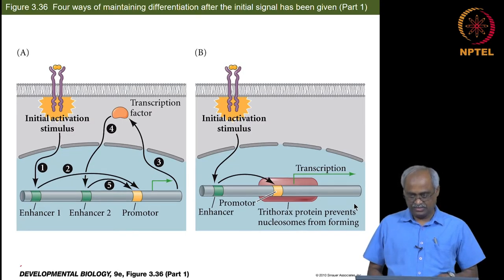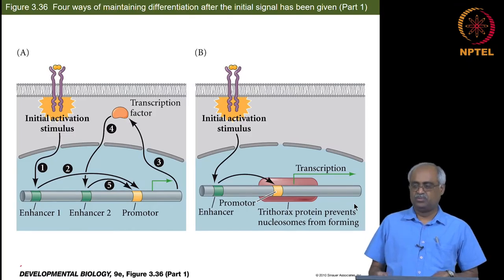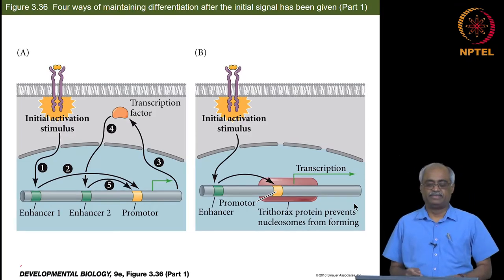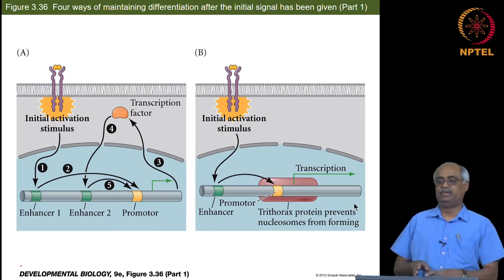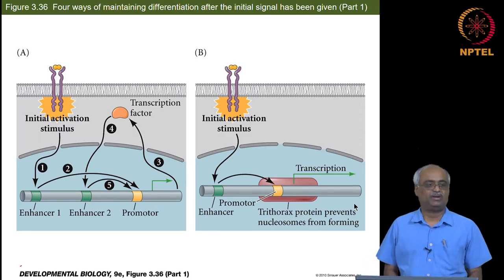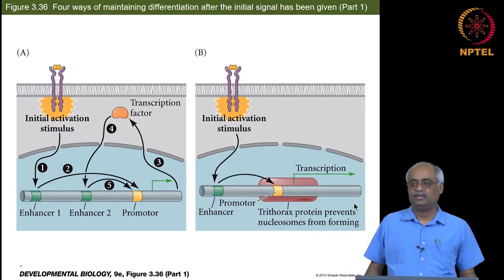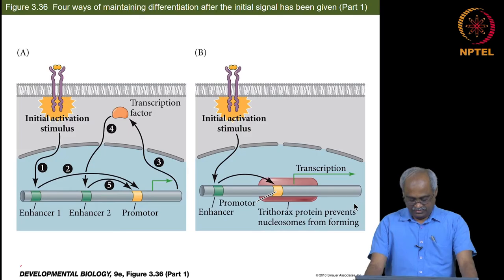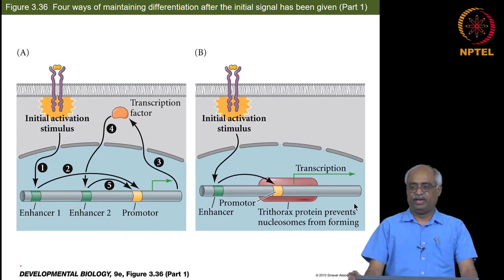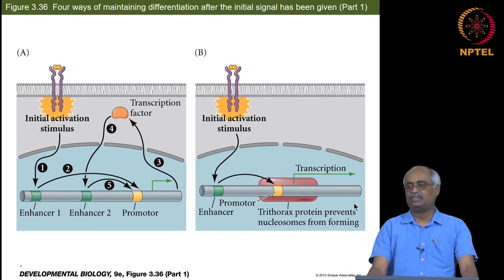Continuing with cell signalling: the key steps are signal, ligand-bound receptor, transduction, then gene expression is altered. Targets are either activated or suppressed, and this regulation is very finely controlled — the moment you do not have the signal, it stops right away.